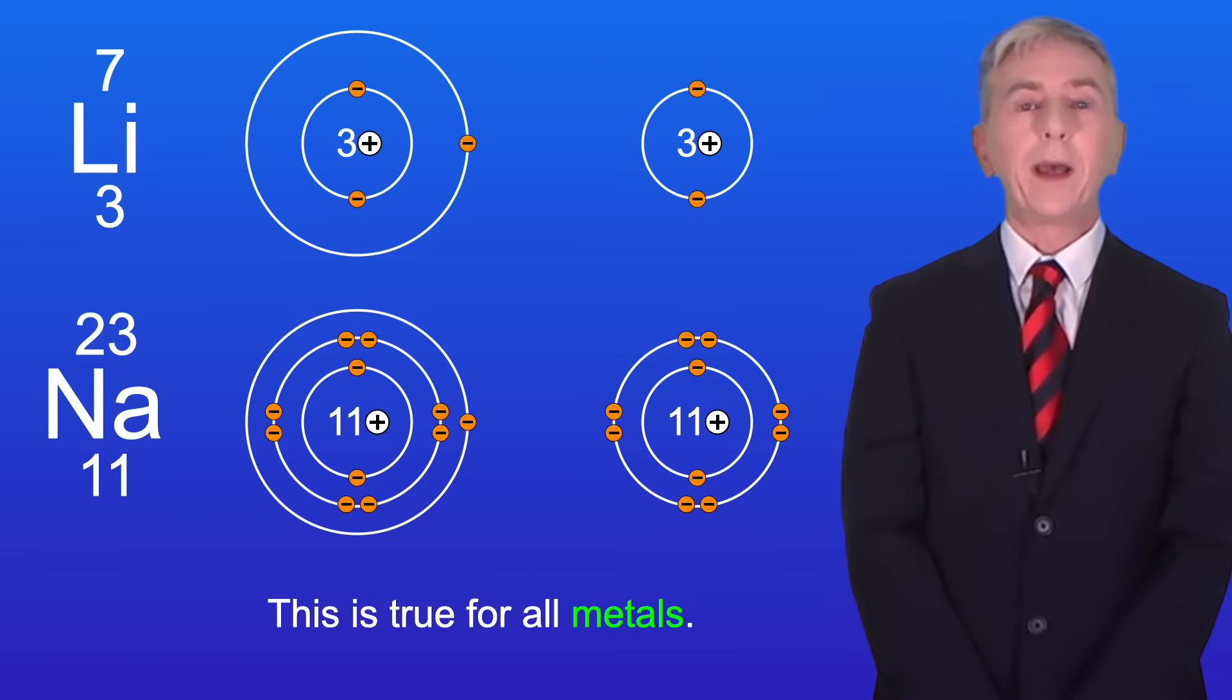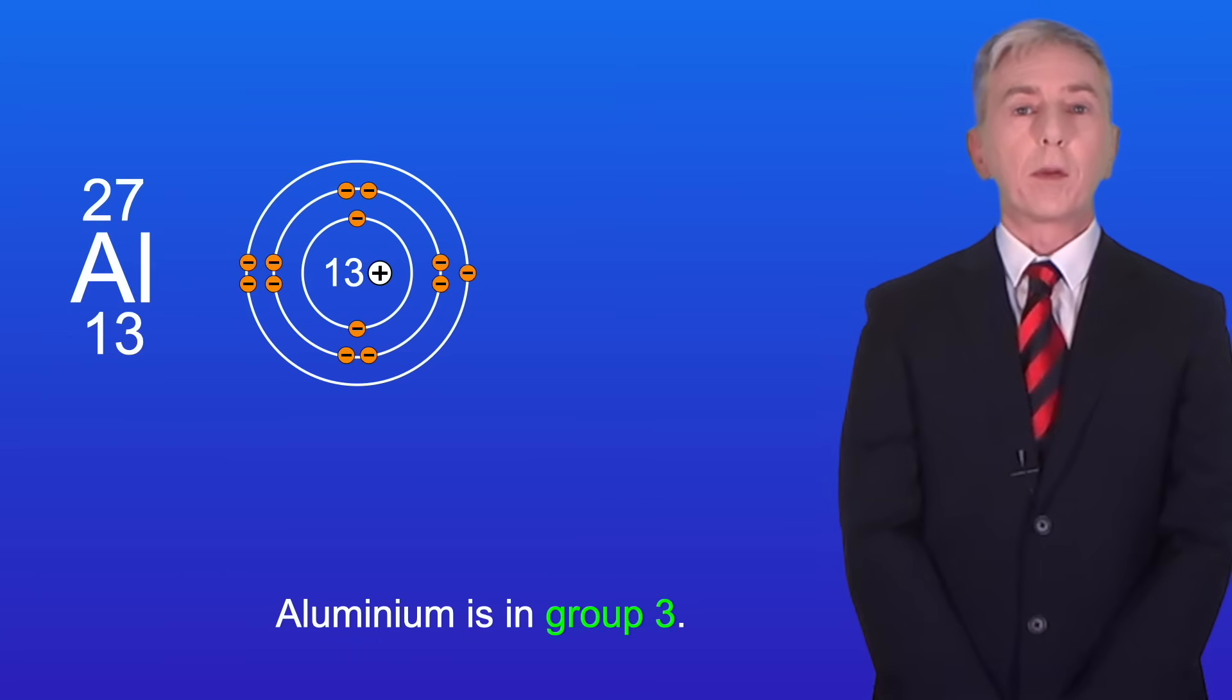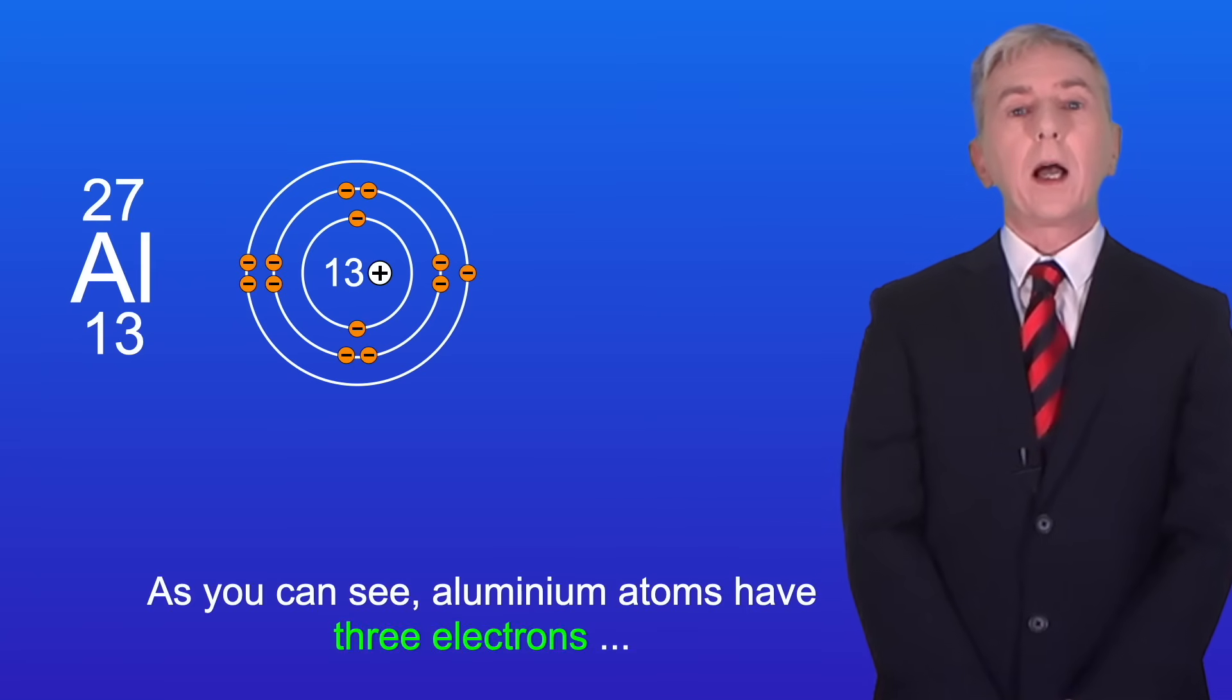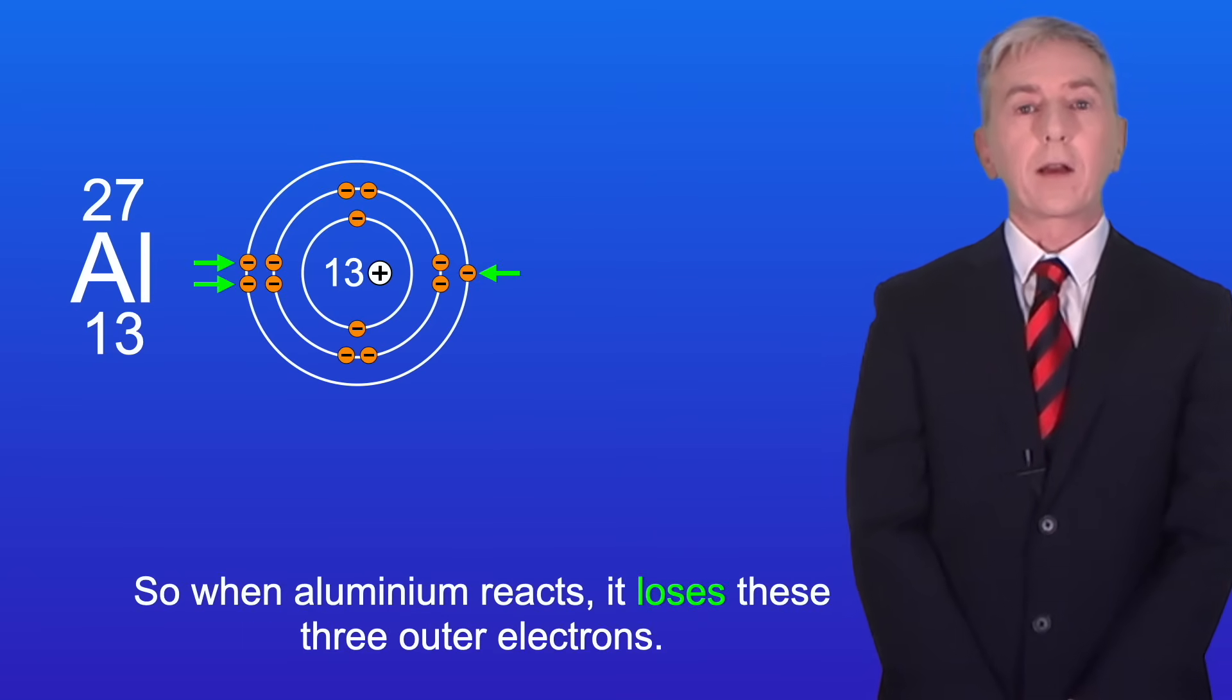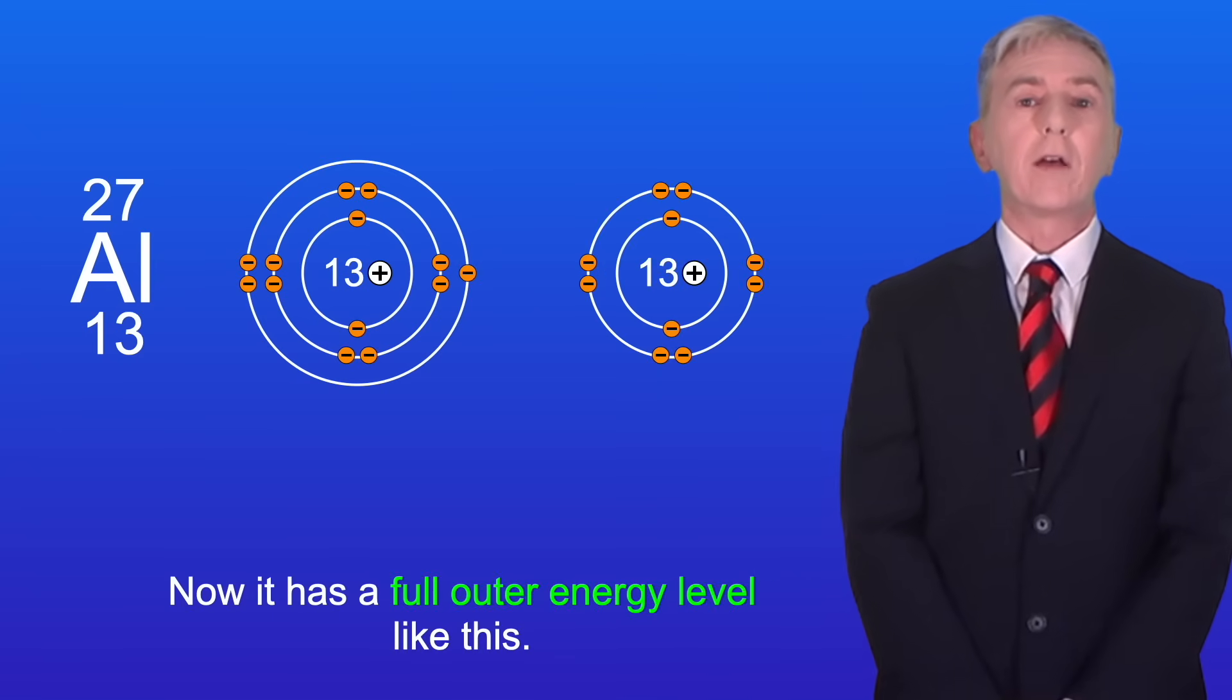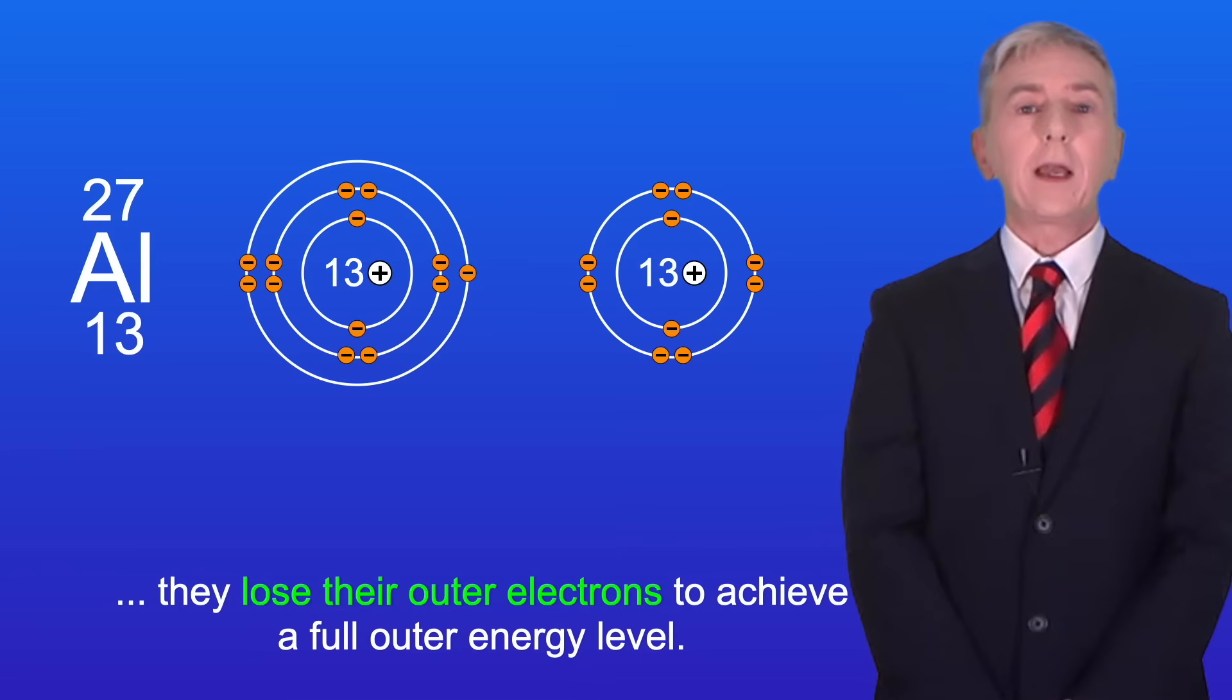Now this is true for all metals. For example I'm showing you the metal aluminium here. Aluminium is in group 3 and as you can see aluminium atoms have 3 electrons in their outer energy level. So when aluminium reacts it loses these 3 outer electrons and now it has a full outer energy level like this. So you need to learn that when metal atoms react they lose their outer electrons to achieve a full outer energy level.